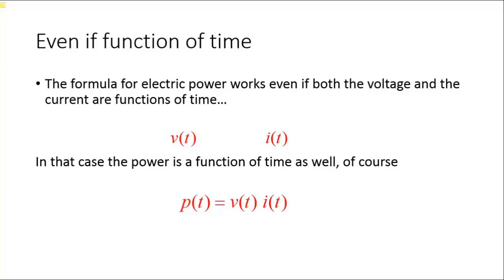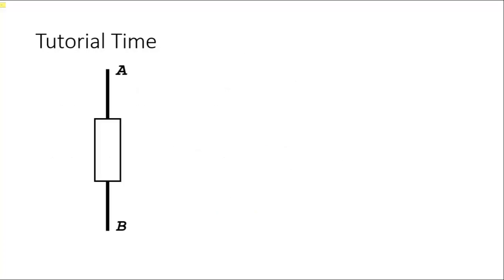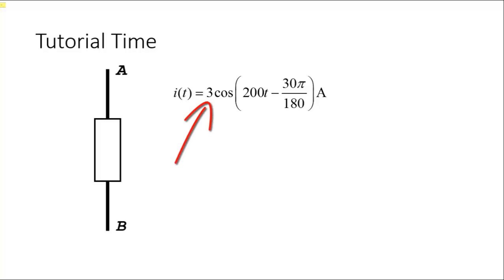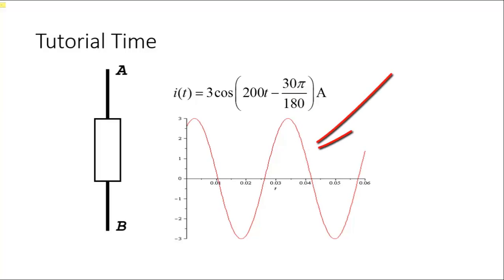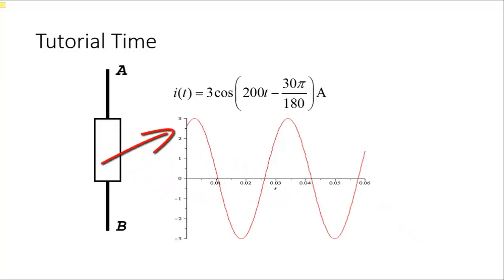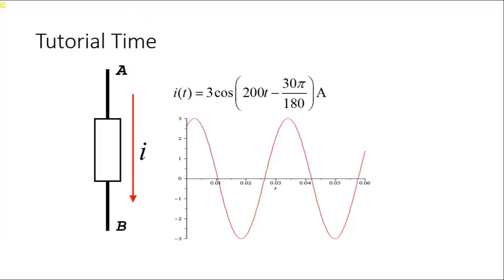VIP. Which brings us to another tutorial. Through this element flows a sinusoidal current — a cosine is also a sinusoidal wave. It is a current with a 3 amps amplitude, an angular frequency of 200 radians per second, and negative 30 degrees of phase shift. Let's plot it. That current is sometimes positive and sometimes negative — sometimes it flows from A to B, and sometimes from B to A. We use a convention: this arrow tells us that when the curve is positive, the current flows in that direction.